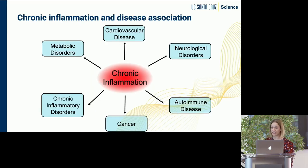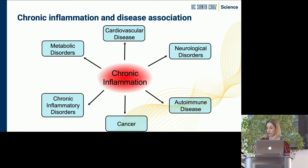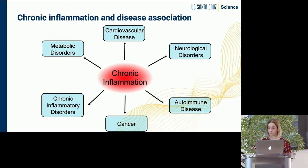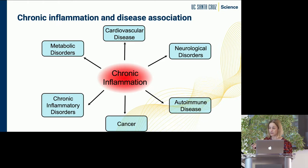Chronic inflammation is a central feature of every single condition you can think of, whether it's cardiovascular disease, cancer, or autoimmunity. All of those conditions lead back to chronic inflammation. That's why we're so interested in really understanding the processes that govern chronic inflammation, because if you could design better drugs to target that, you could have a massive impact on a whole host of different conditions.